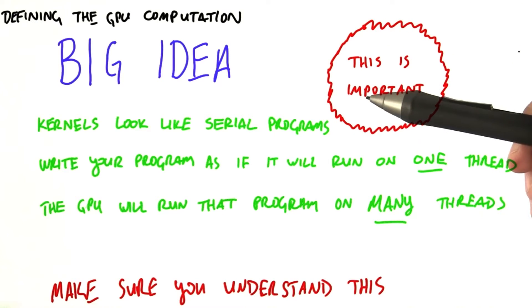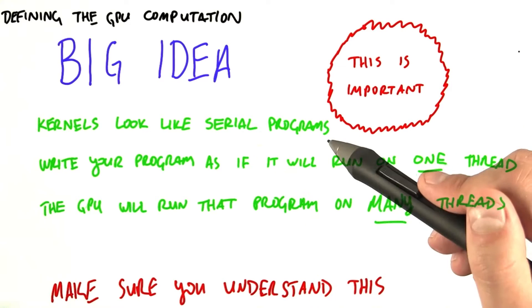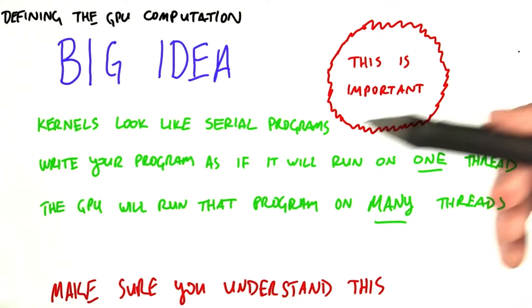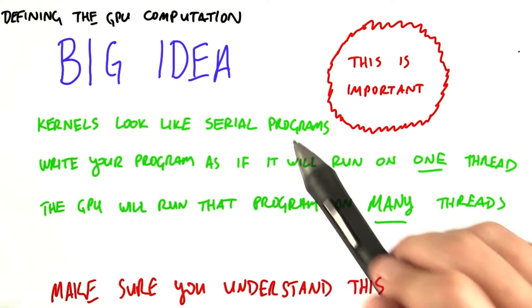We structure that computation as a series of one or more kernels. Now, as we said earlier, the GPU has lots of parallel computation units. So when you write kernels, those kernels need to take advantage of that hardware parallelism. So how do they do that?